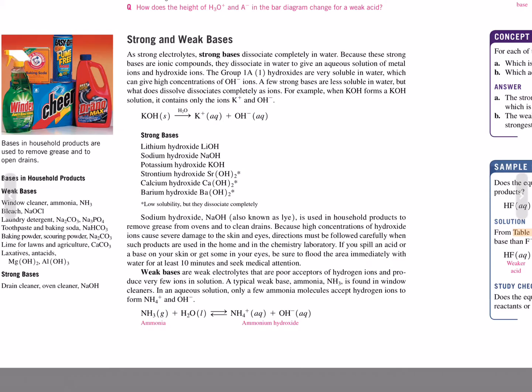Figure 14.3: After dissociation in water, a strong acid, HA, has a high concentration of hydronium and conjugate base. A weak acid, HA, has a high concentration of HA and a low concentration of hydronium and the conjugate base.